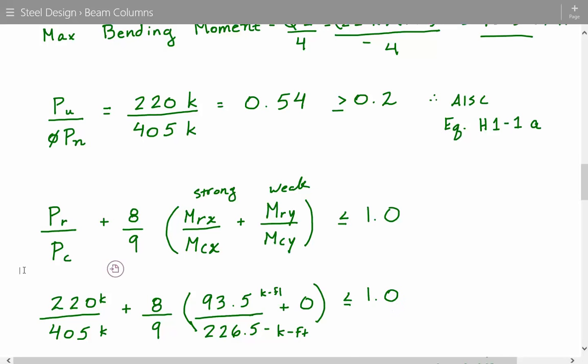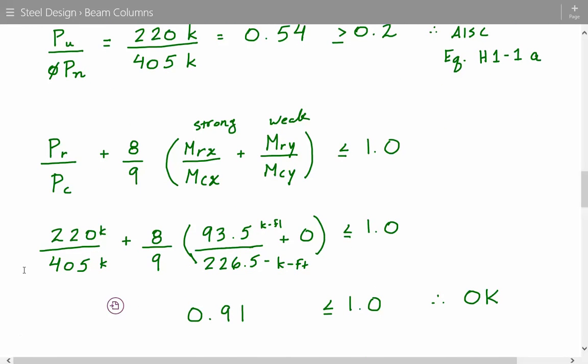So we calculate this value to be 0.91, and that's less than or equal to 1.0. So this beam column is satisfactory per AISC.